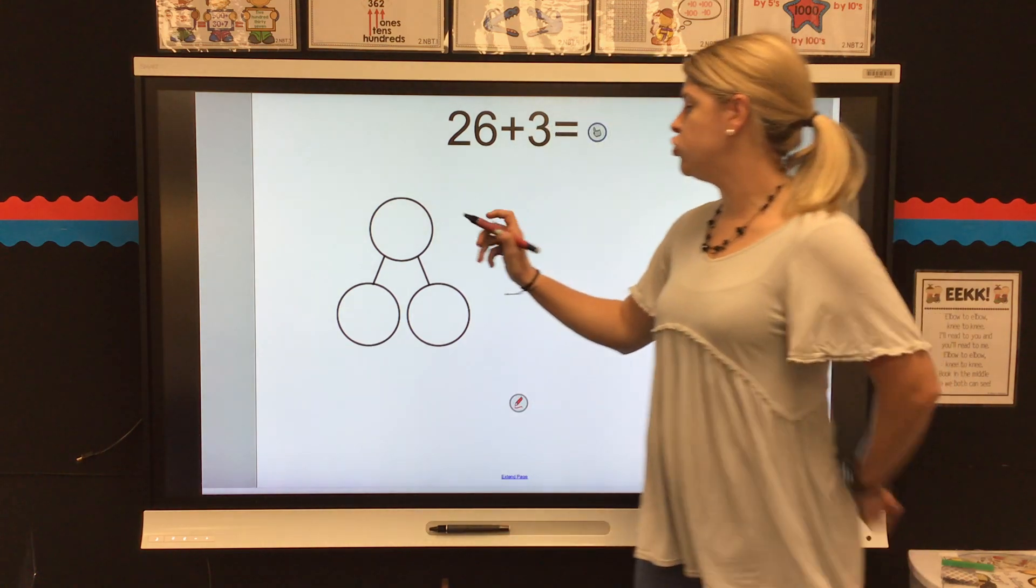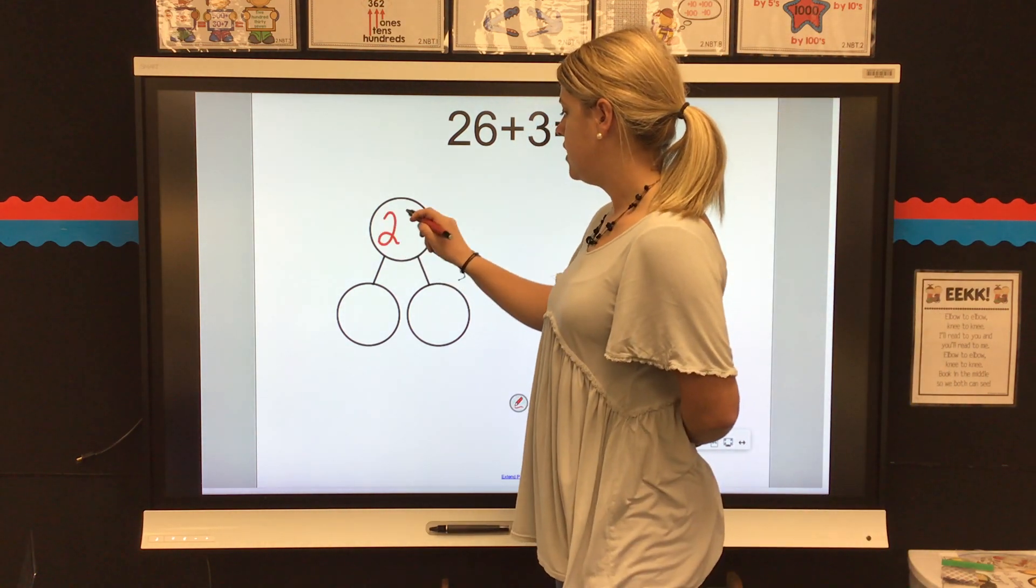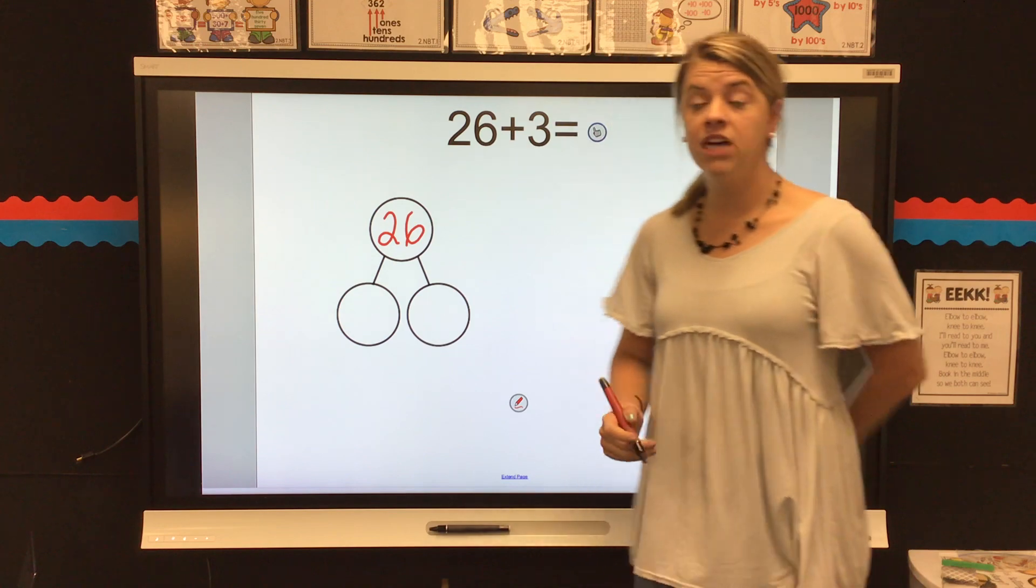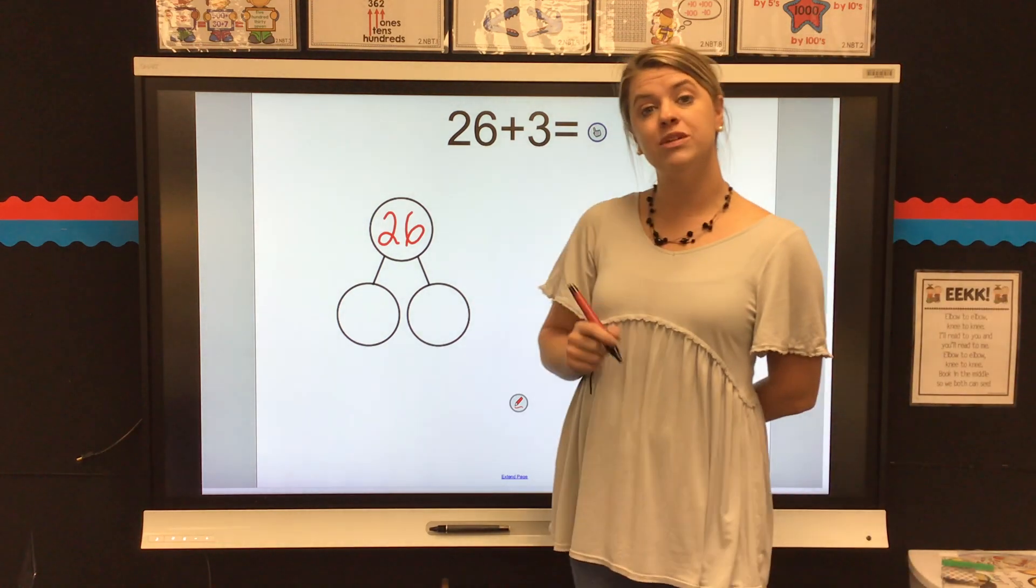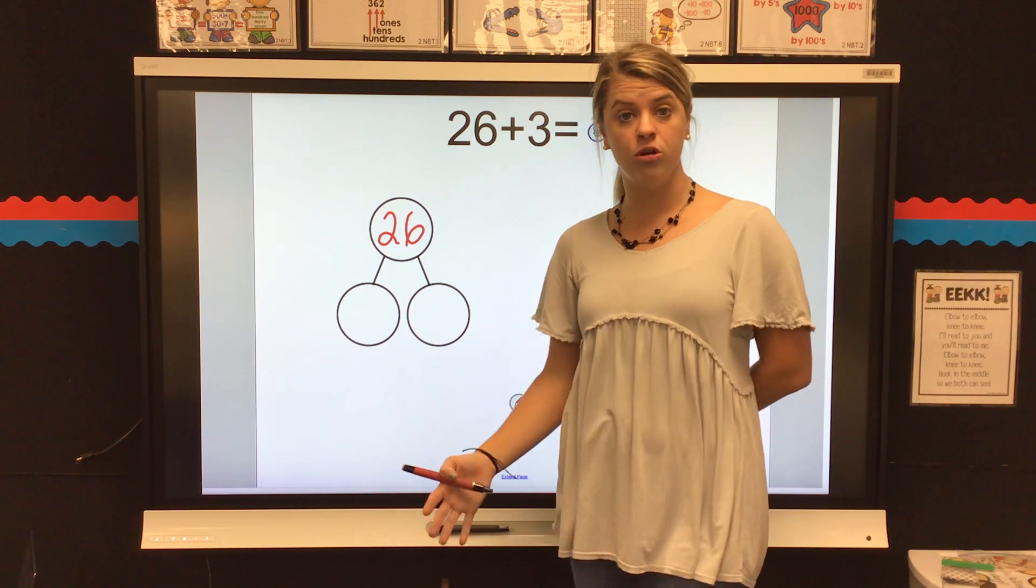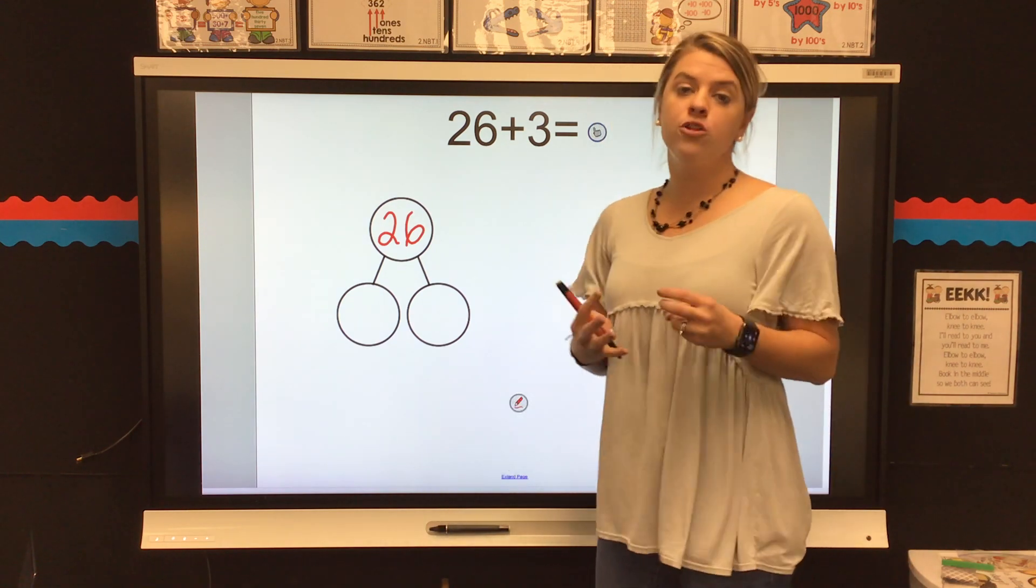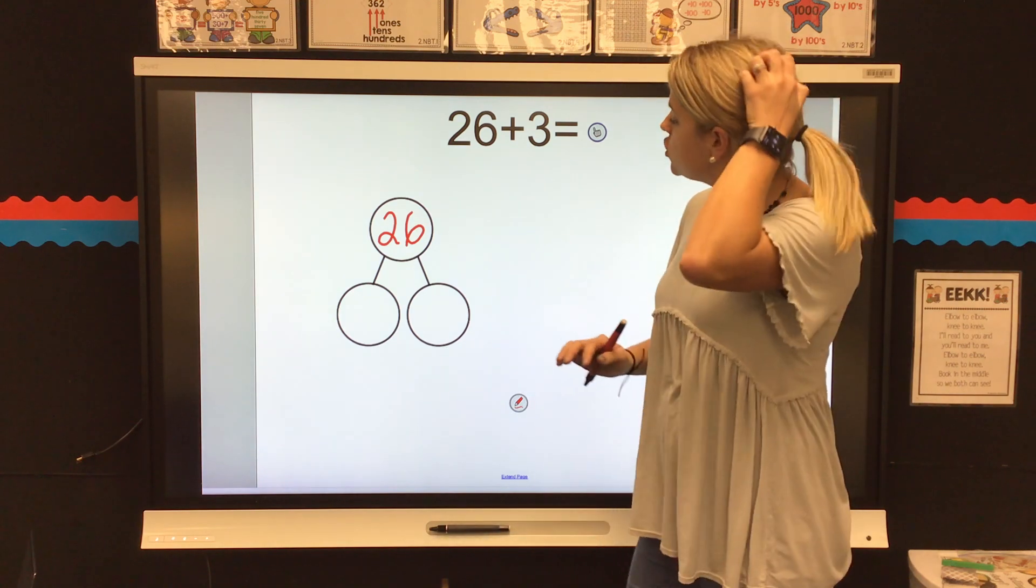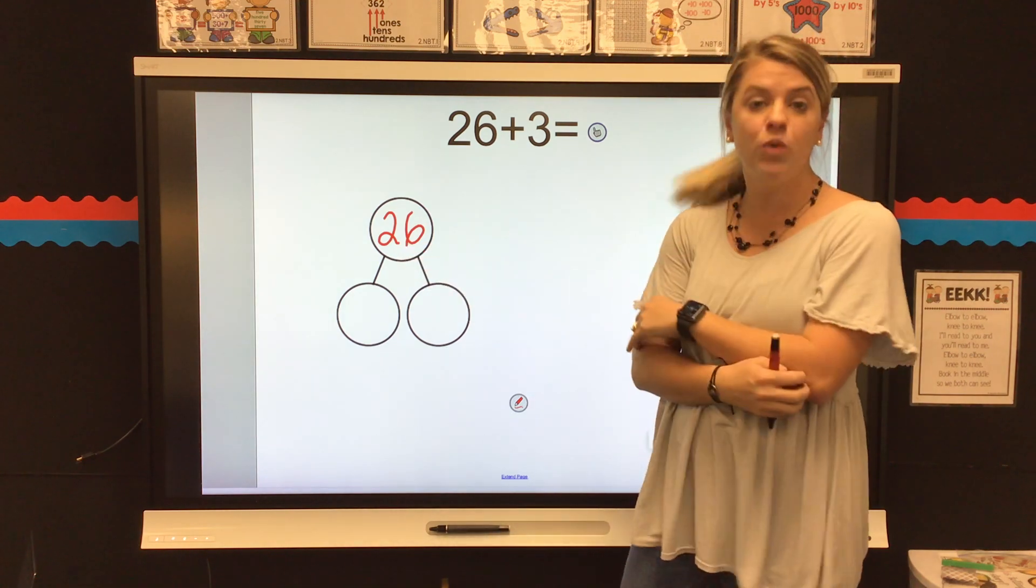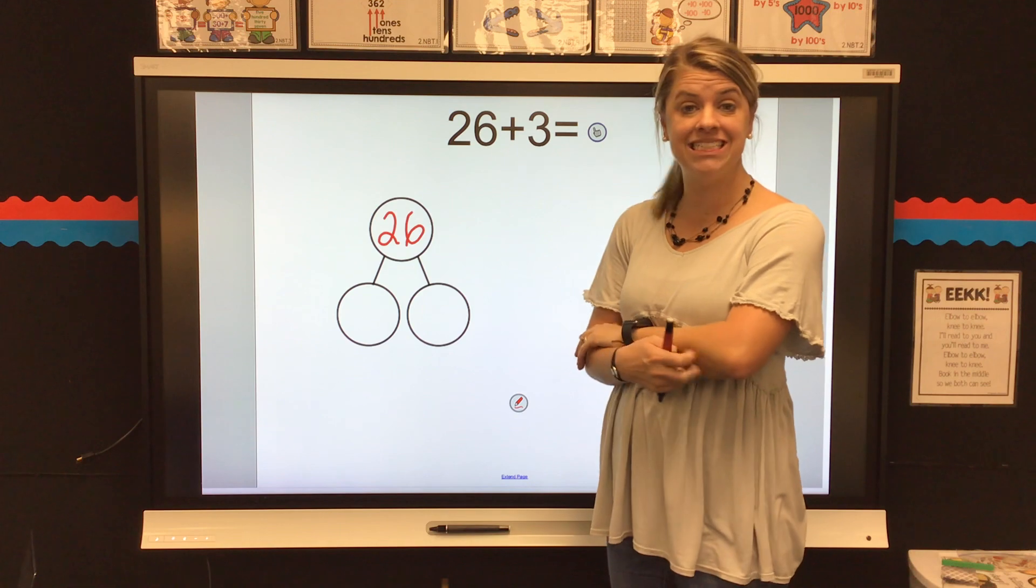So, I'm going to put the number 26 in my top circle of my number bond. And then what I'm going to do is, I'm going to decompose my number. When we hear the word decompose, it means to break something down. So, we're going to break our number 26 down into tens and ones.